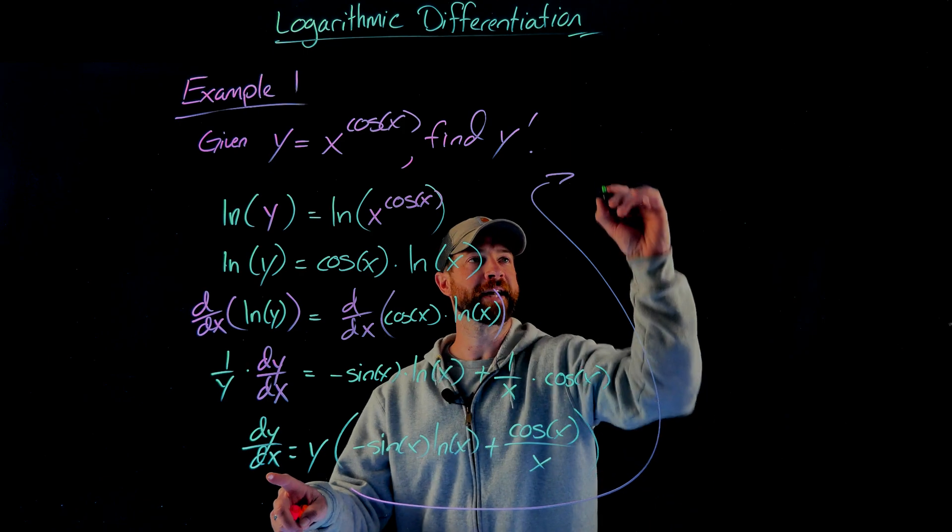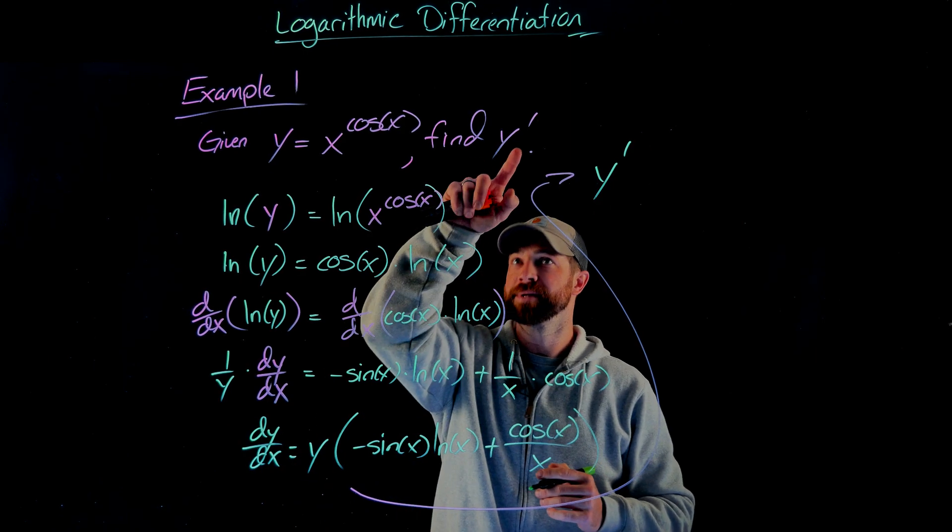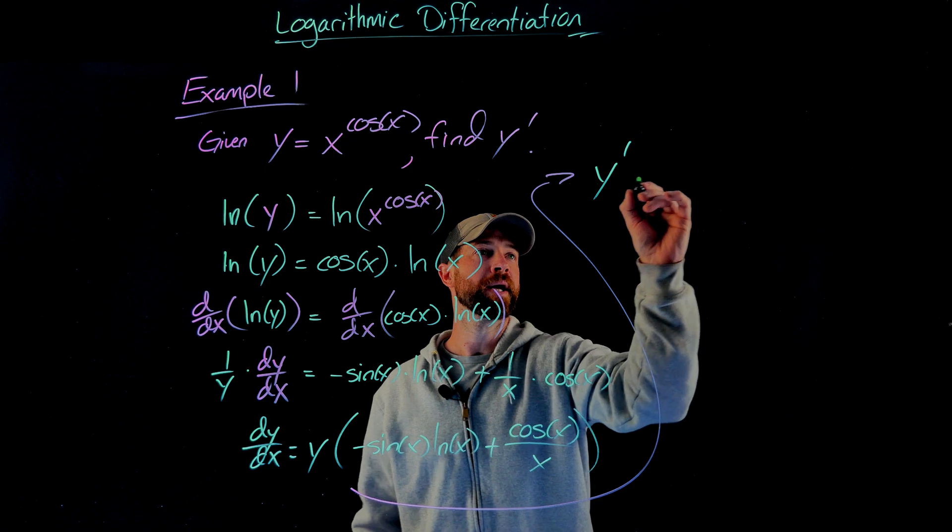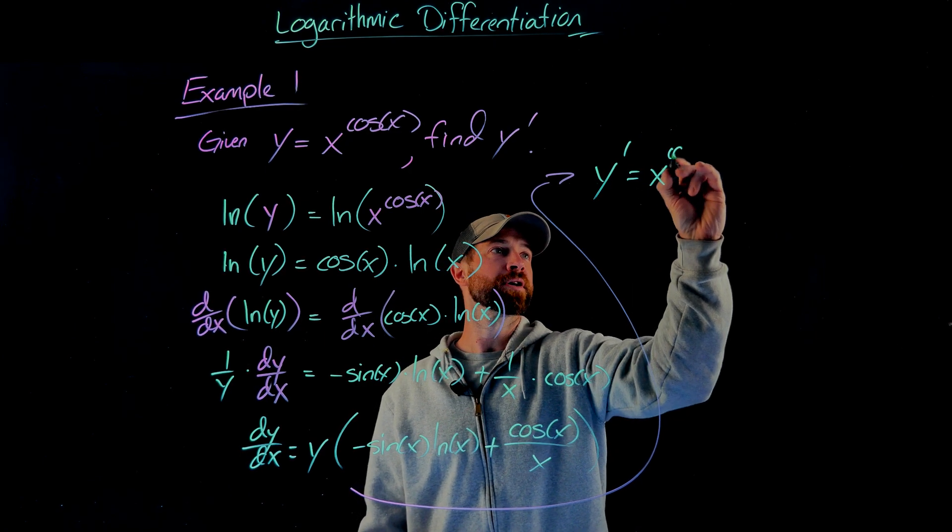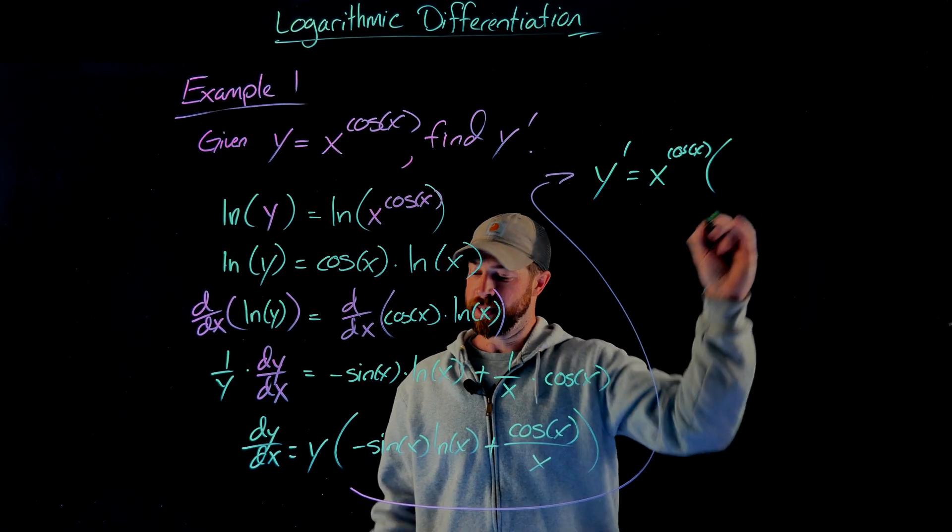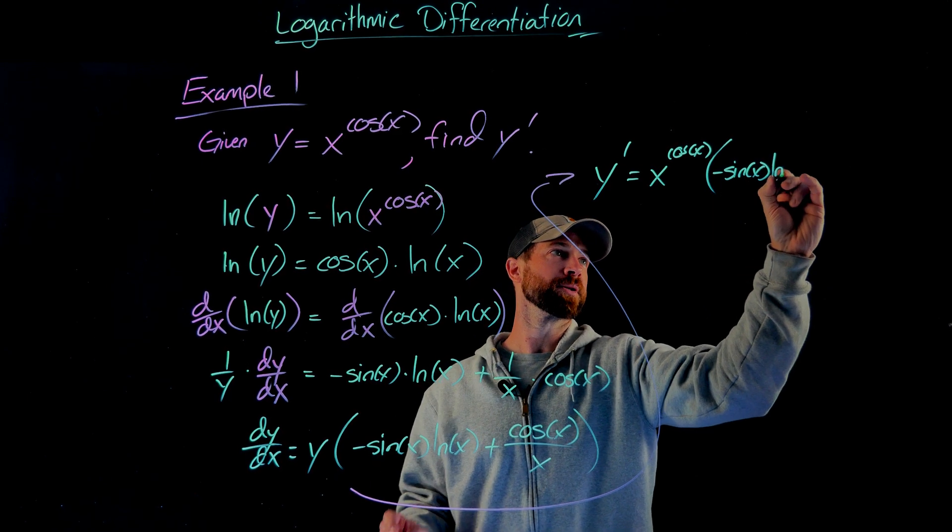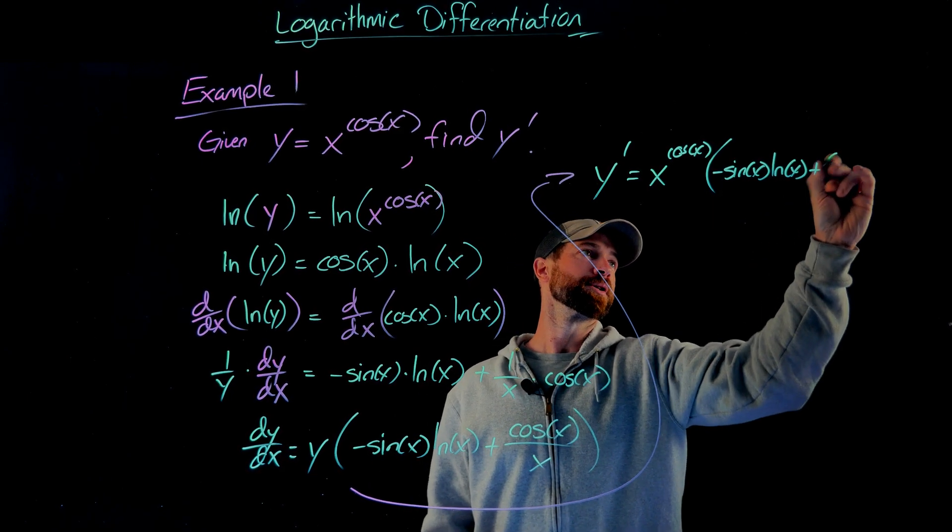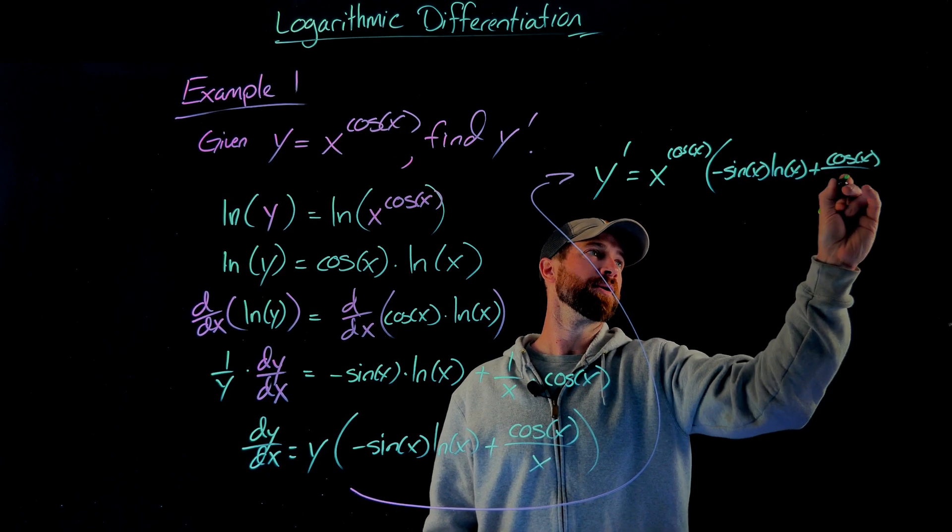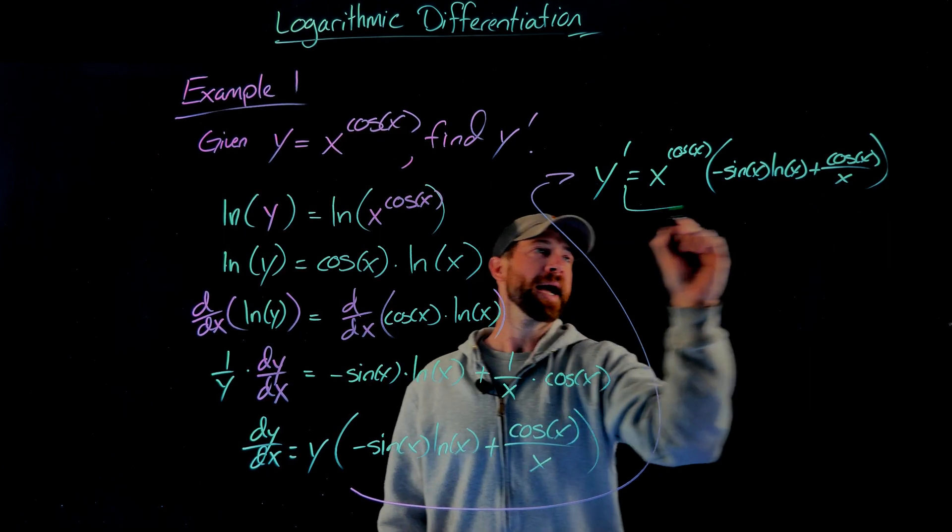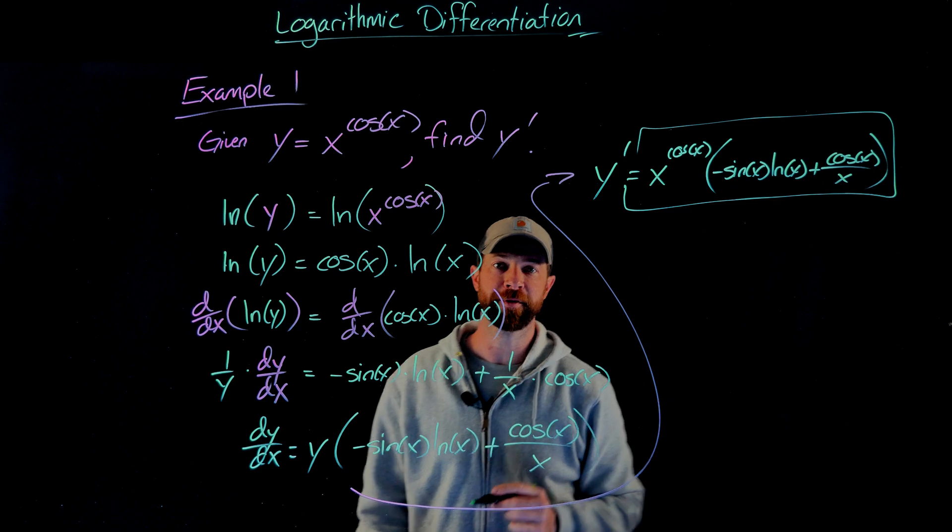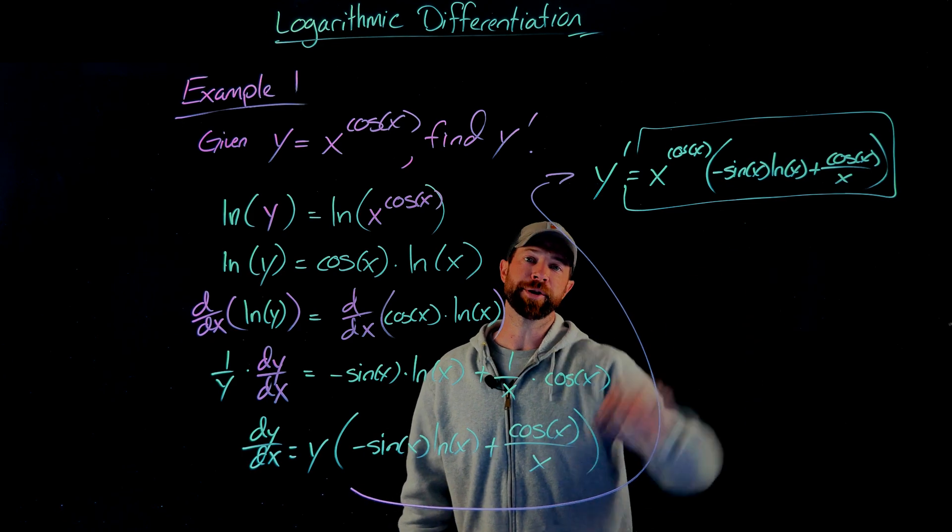Giving me for a final answer, I have dy dx or y prime, since they asked me to find y prime, equals x cosine of x, times all of this jazz, minus sine of x, natural log of x, plus cosine of x over x. Now I have my y prime, or my first derivative, all in terms of x.